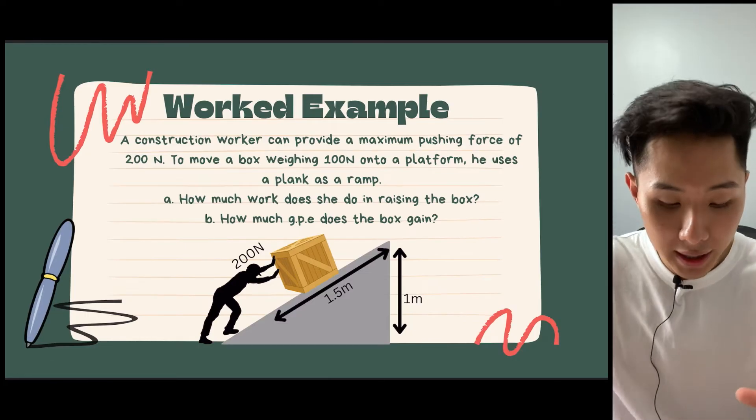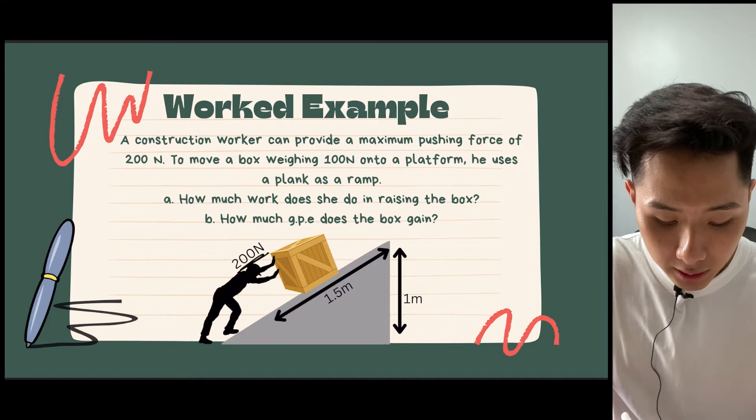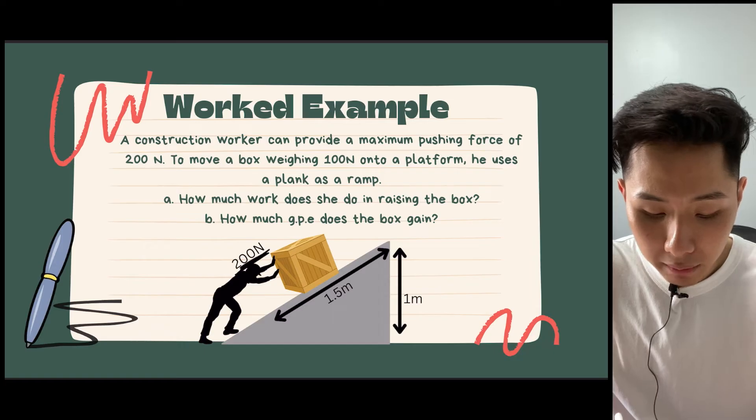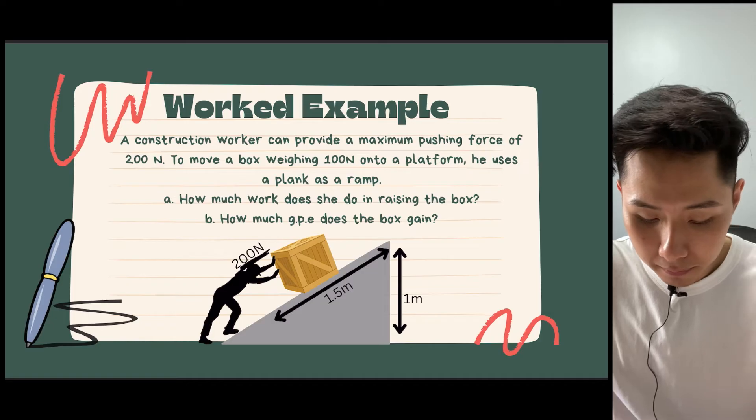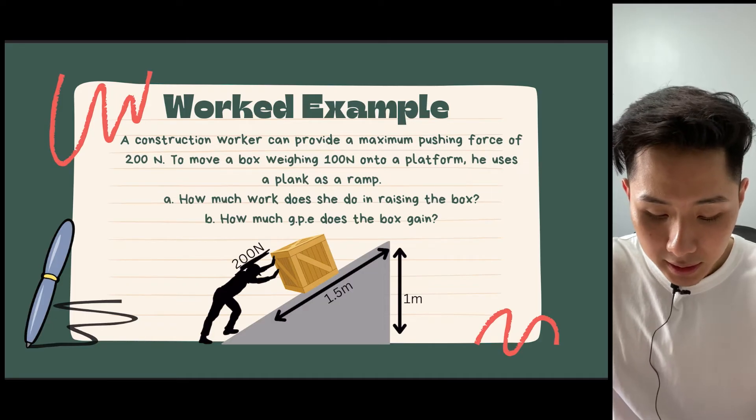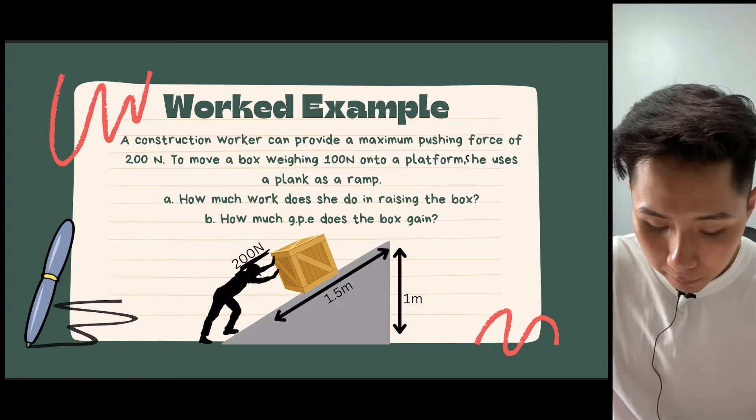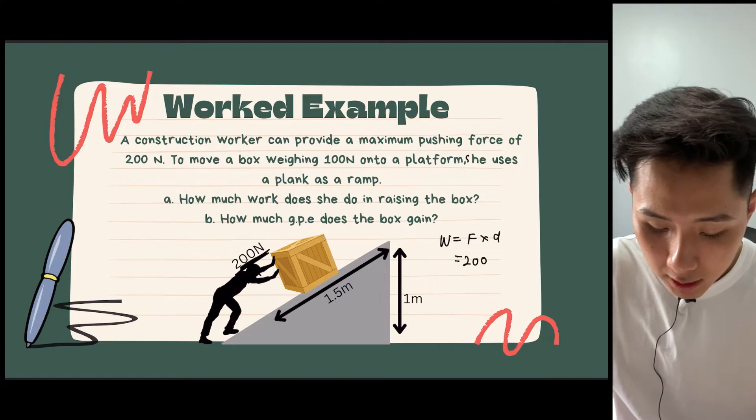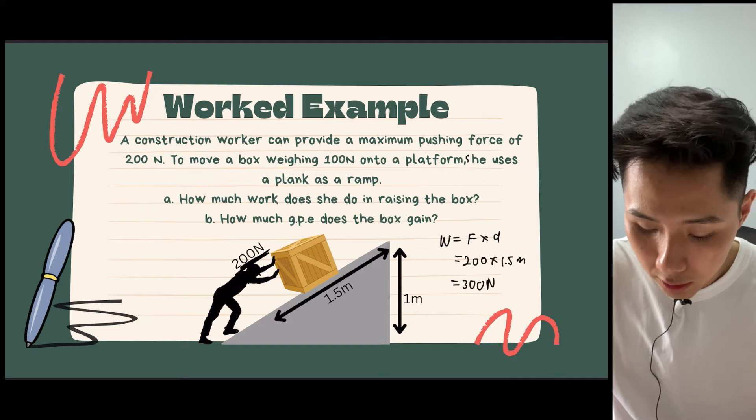So let's look into an example again. We have this person pushing a force of 200 Newton to move a box weighing 100 Newton onto the platform, using a plank as a ramp. And how much work does she do in raising the box? Again, for calculating work, W equal to F times D. Force is 200. And the distance moved is 1.5 meter. Therefore, we got 300 Newton meter.